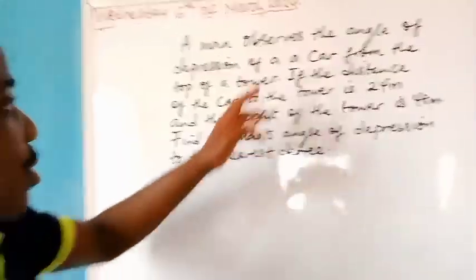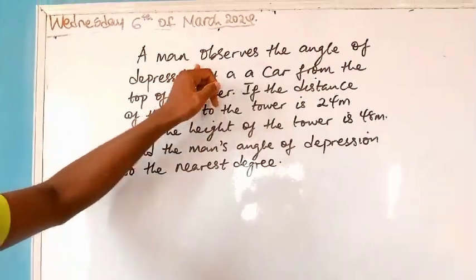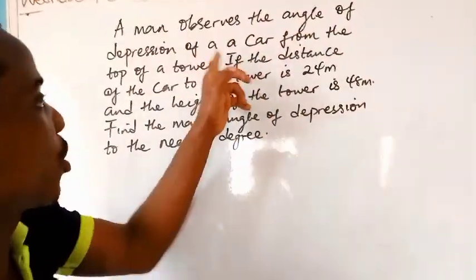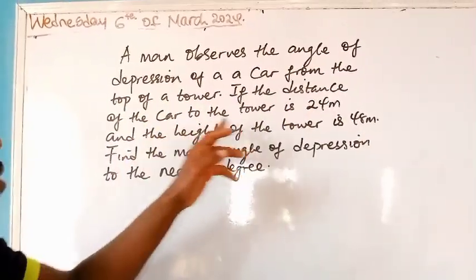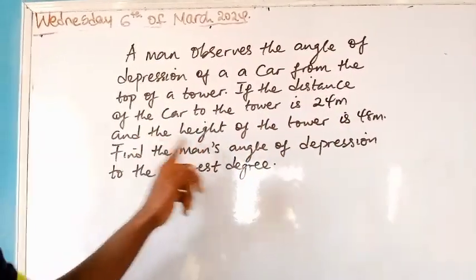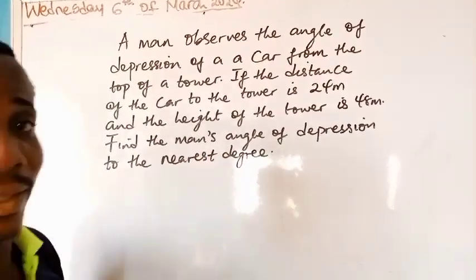All right, so in this question we want to find the angle of depression. It says a man observes the angle of depression of a car from the top of a tower. The distance of the car to the tower is 24 meters, and the height of the tower is 48 meters. Find the man's angle of depression to the nearest degree.